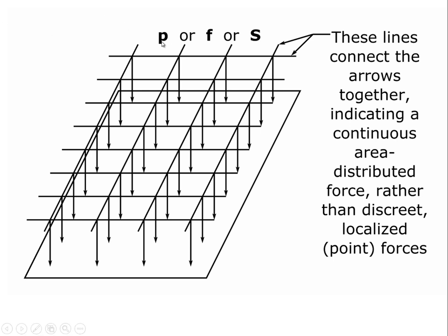Lowercase p stands for pressure. Lowercase f is sometimes used for stress, taken from the notion of an area distributed force. S is also used for stress — for example, in computer programs like Multi-Frame, stress is expressed as S, though S also refers to a cross-sectional property, which can be confusing. In some books stress is expressed as lowercase sigma from the Greek alphabet, but we won't use that here. We'll generally use p for area distributed stress like live load on a floor, and lowercase f for more intensive internal stress such as in a beam.